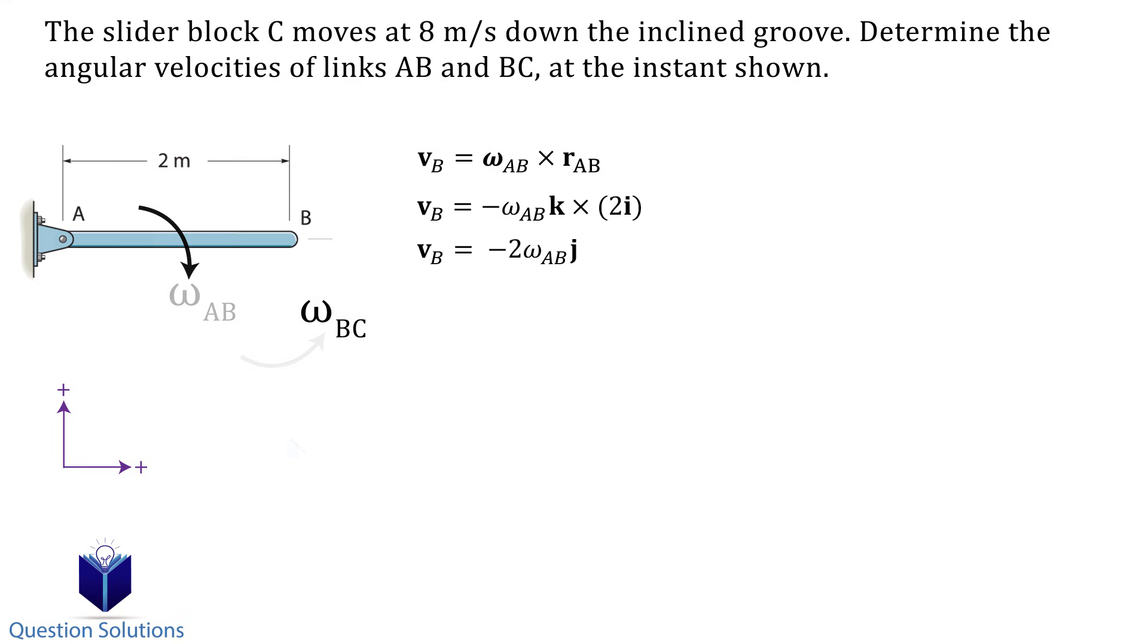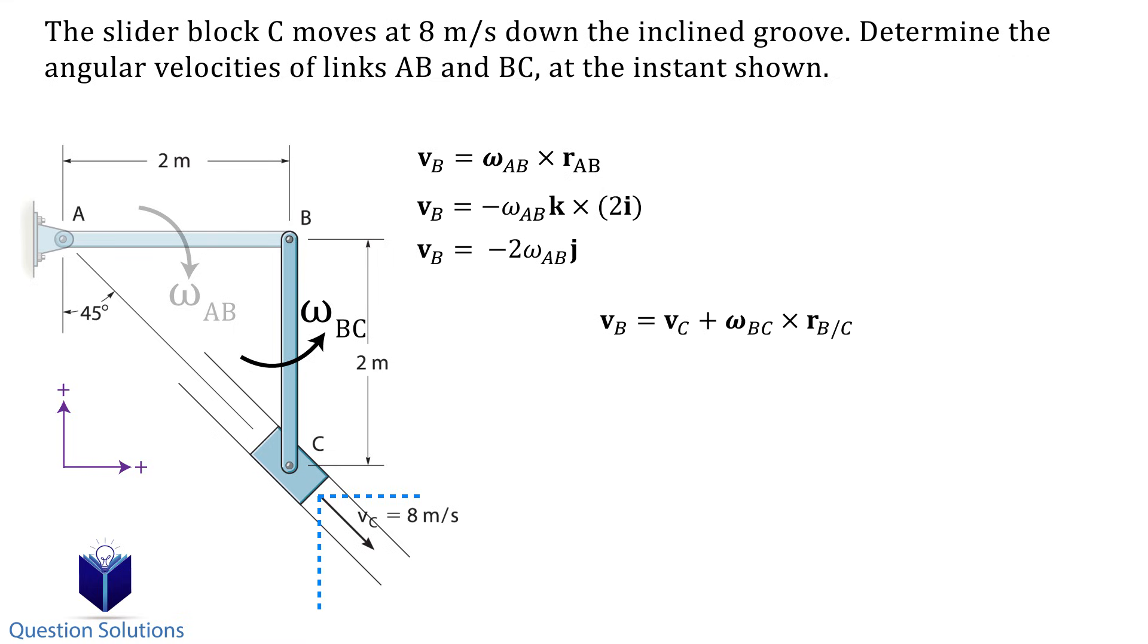Now let's take a look at link BC and draw it separately. We can head straight into the relative velocity equation we talked about, but in its expanded form. Before we plug anything in, let's break down the velocity of C into i and j components. We see that with an angle of 45 degrees, the i and j components can be expressed like this. We also need a position vector from C to B, which is simply 2j.